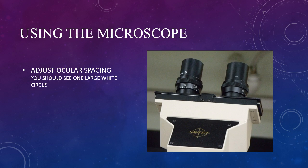Everyone's eyes are different. The spacing between them is different, and every eye itself has a different acuity. Binocular microscopes are designed to compensate for all of this. The first step is to get the ocular spacing correct. You should see one large white circle in the center. If you see two overlapping circles, you need to adjust the oculars in or out.